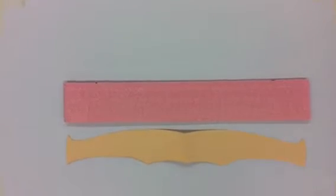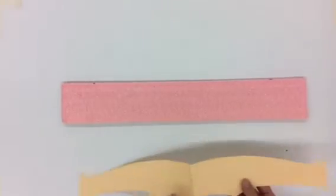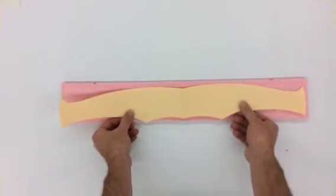All right, welcome to the instructional video on cutting and shaping a wing. This is the part one video. In part one we're going to take our template that we've cut and lay it on top of our styrofoam and trace it out.